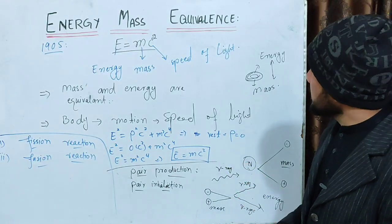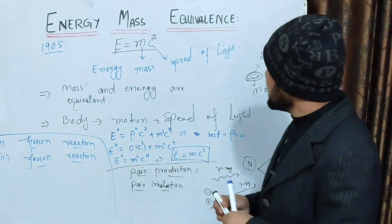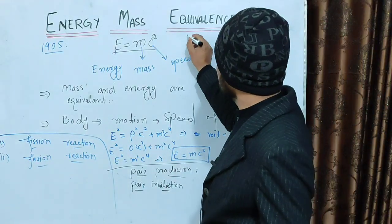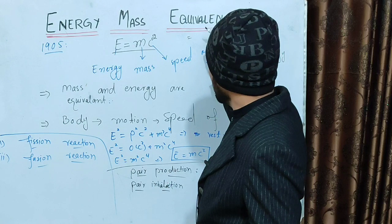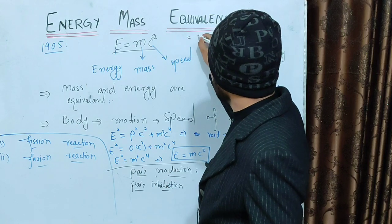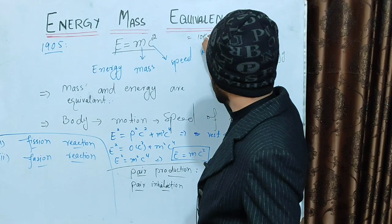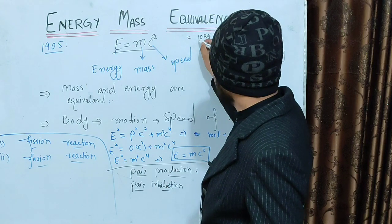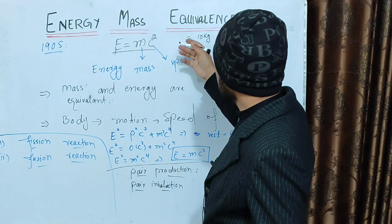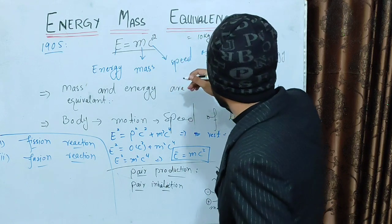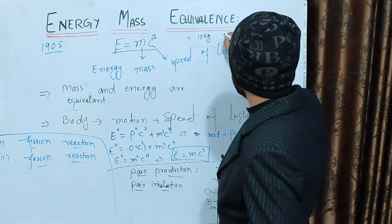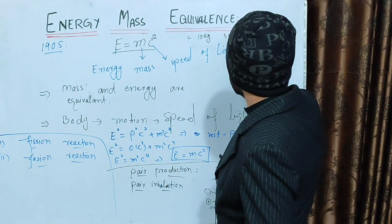For example, if an object has a mass of 10 kg, using E equals mc squared, we multiply 10 kg by the speed of light squared — approximately 3×10⁸ meters per second — to get a huge amount of energy.